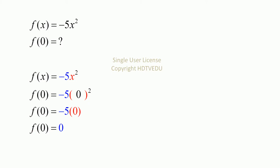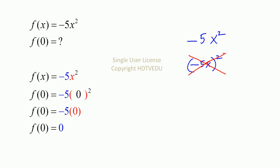We are asked for the value of the function at x equals 0. That means we replace x with 0. Some students confuse this with negative 5x, then squared — no. It is negative 5 times x to the power of 2.